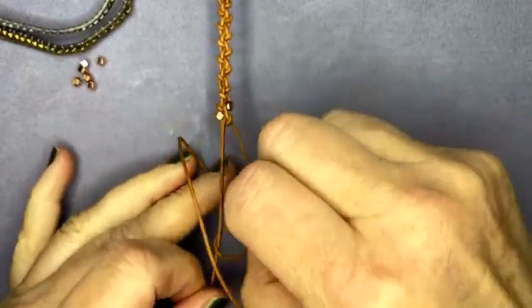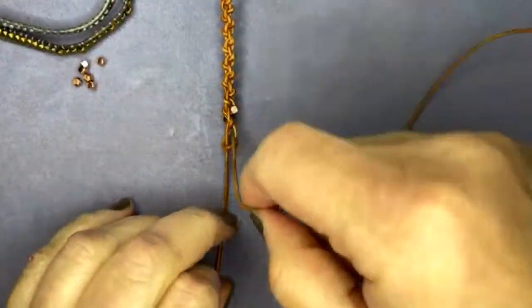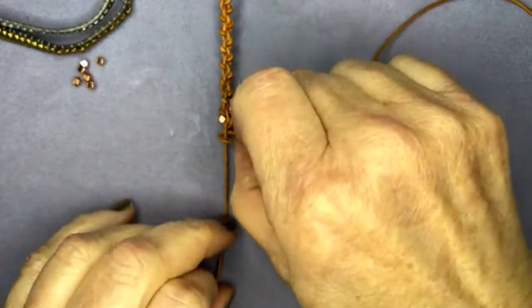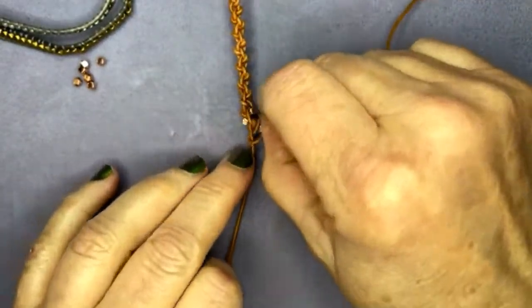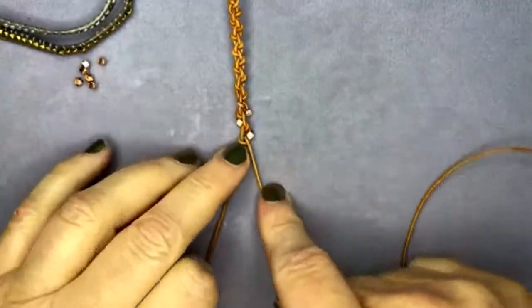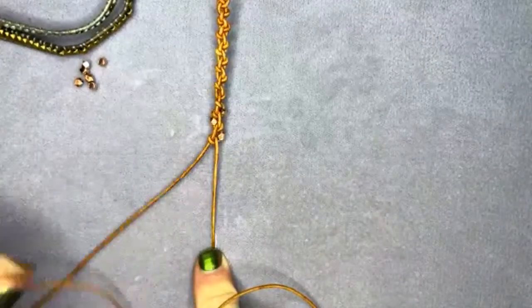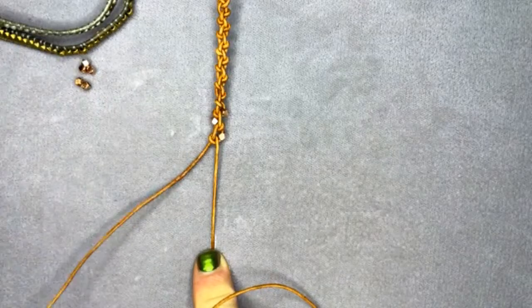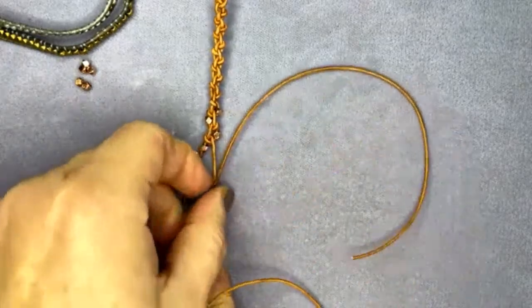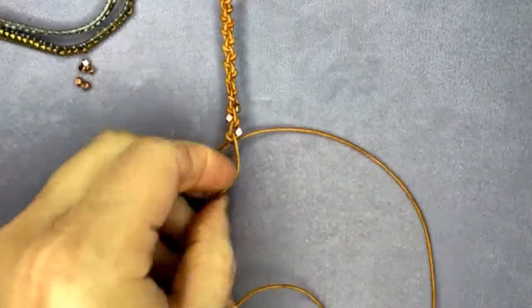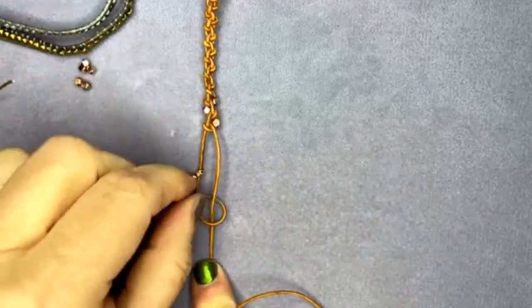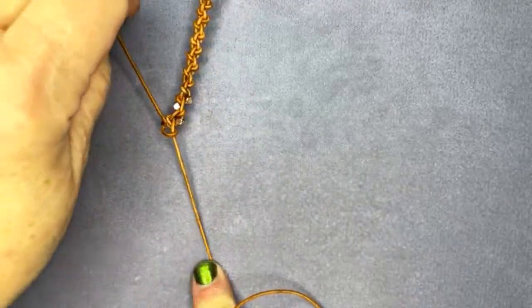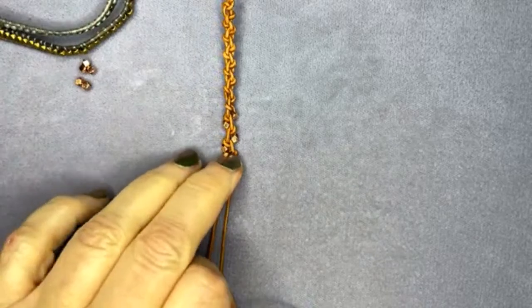Make my loop. Tighten it up. It's a little slower going. And I pull the right hand tight. Slide my bead up. Make my loop. Flip my thread through. And tighten that up.